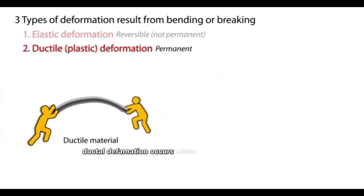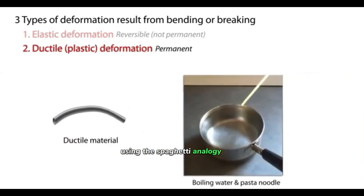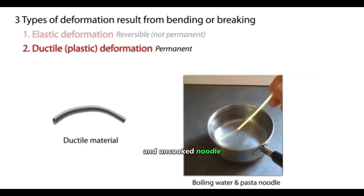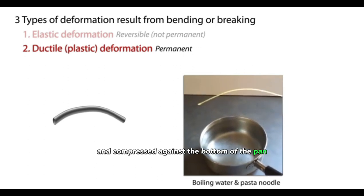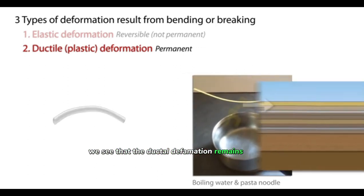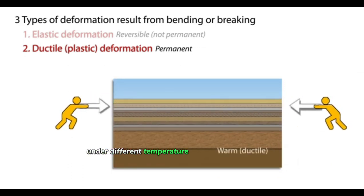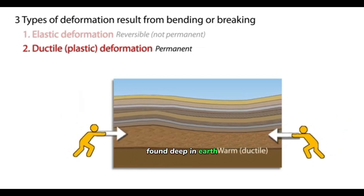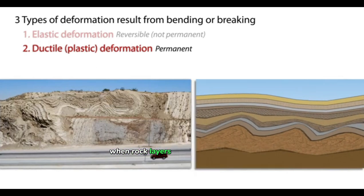Ductile deformation occurs when rocks undergo bending that remains even after the stress is removed. Using the spaghetti analogy again, an uncooked noodle undergoes ductile deformation when placed in boiling water and compressed against the bottom of the pan. When the stress is removed, we see that the ductile deformation remains. Similarly, the same rock that can deform elastically could, under different temperature and pressure conditions found deep in Earth, undergo ductile deformation. We can see evidence of ductile deformation when rock layers are deformed at depth and are later uplifted and revealed at the surface, as in this road cut.